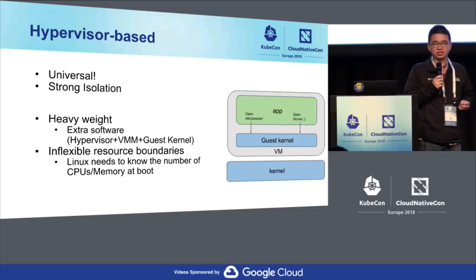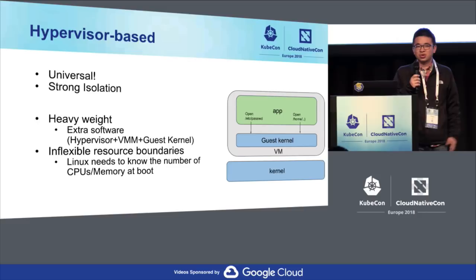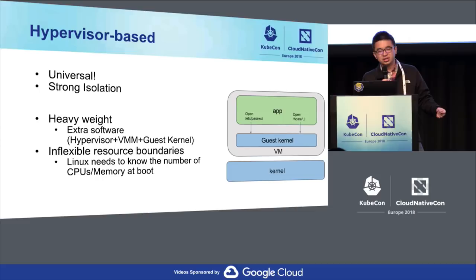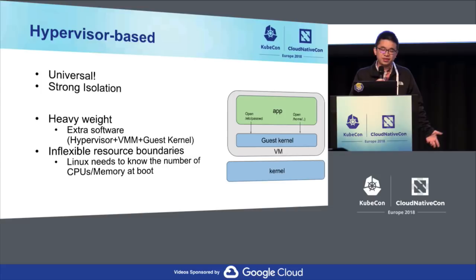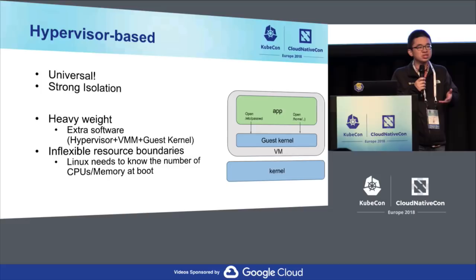A new set of solutions: shout out to Kata Containers, Clear Containers, HyperV, and noVM from Google — working on hypervisor-based solutions. Hypervisor-based security gives us strong isolation. However, the drawbacks are it's heavyweight — more code to run — and has inflexible resource boundaries. For example, when you launch a container you have to tell the VM how many CPUs and how much memory, instead of running a cgroup like a native container and then increasing CPU quota or memory at runtime.